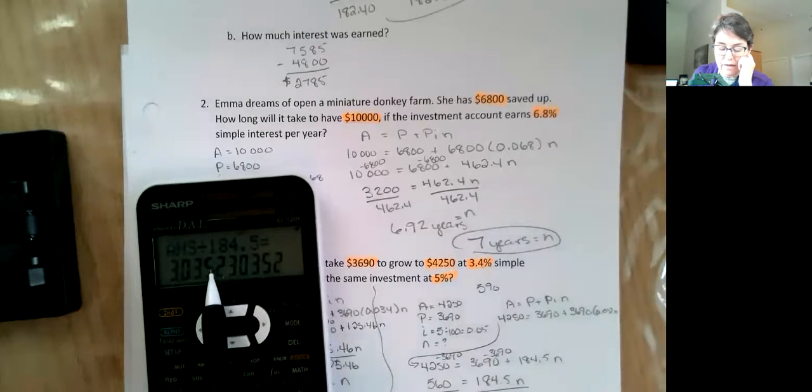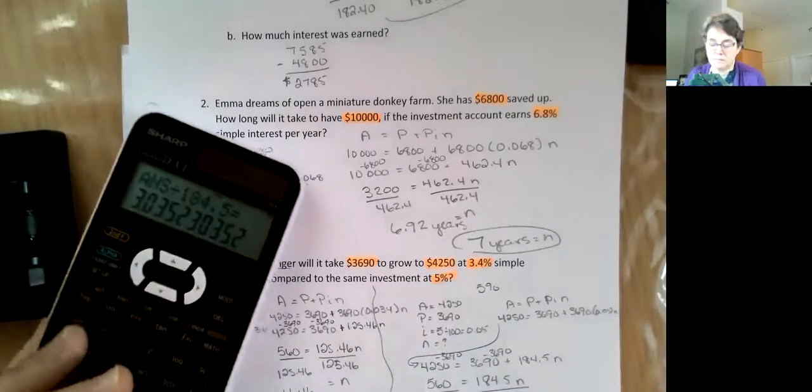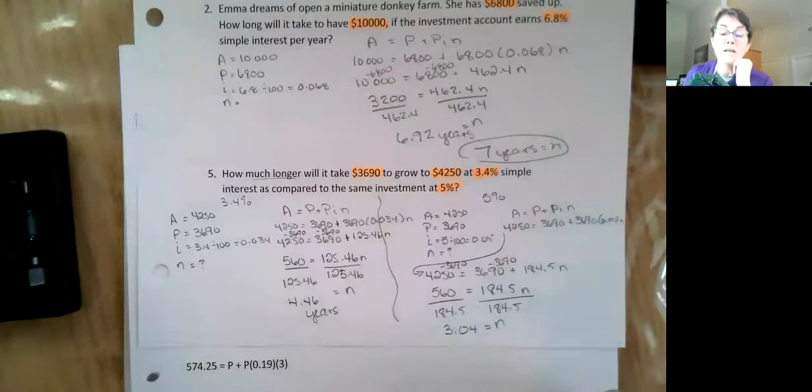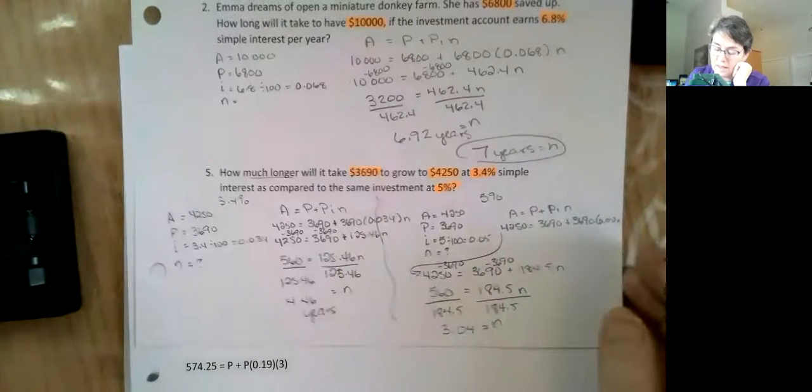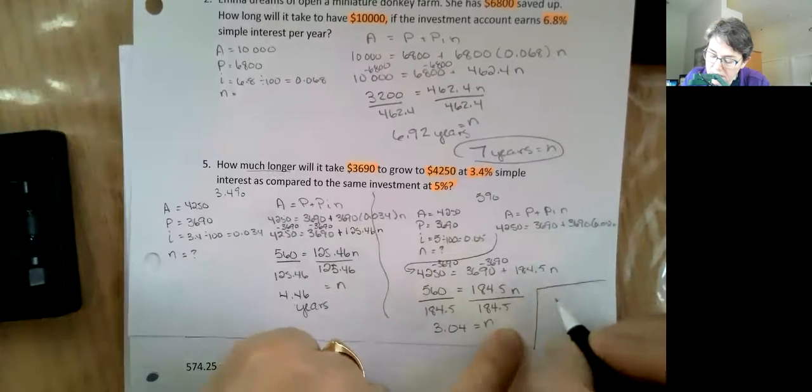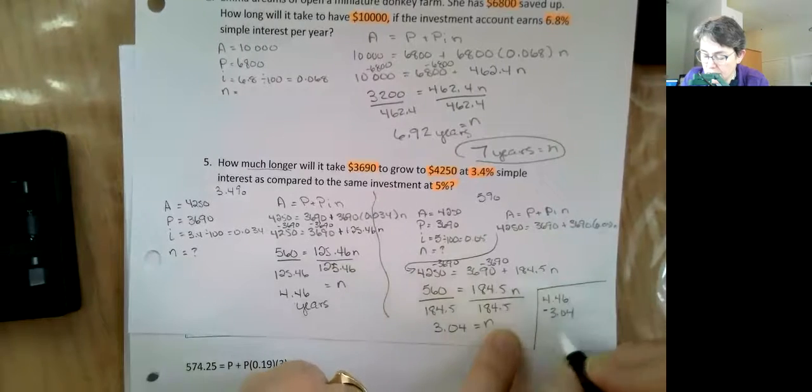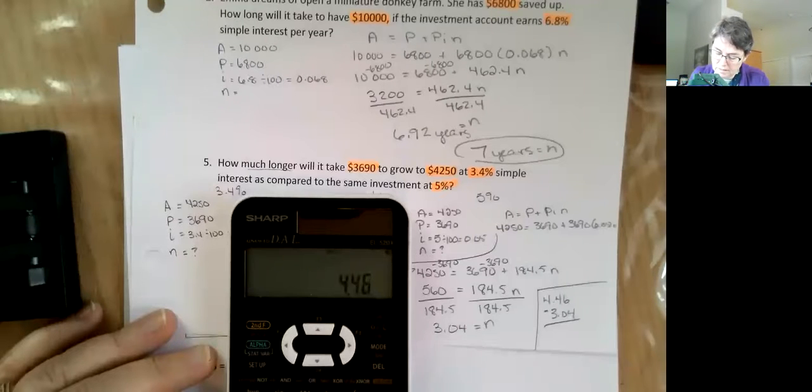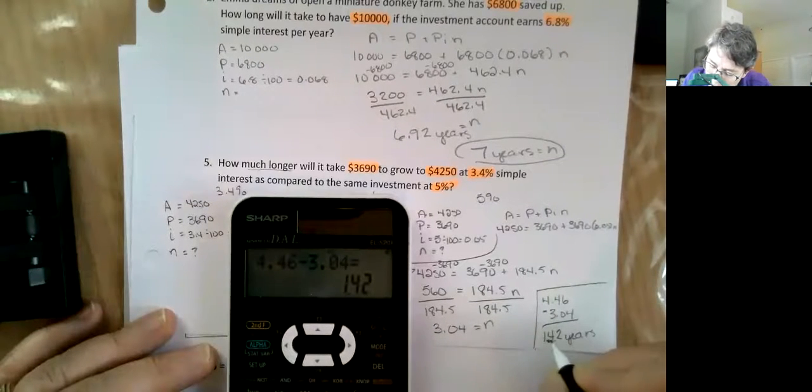So I got 4.46 and 3.04. That 5% makes the time go down. I'm sure I had somebody yelling at me because I don't show you the screen when I work off the screen. 4.46 and 3.04. Now your final answer is 4.46 minus, because how much longer, minus 3.04. That's 1.42 years. And remember to put the decimal in there. Anyway, that is the end of the video.